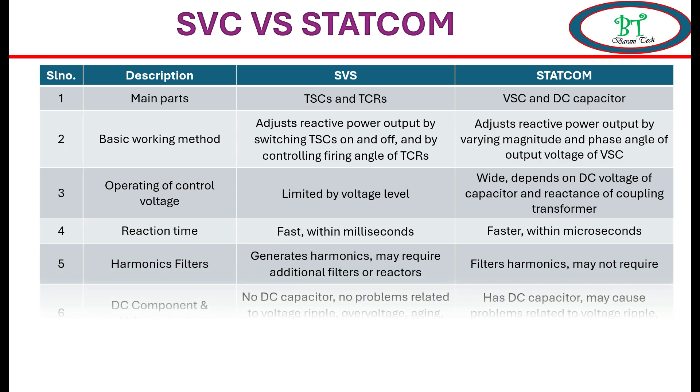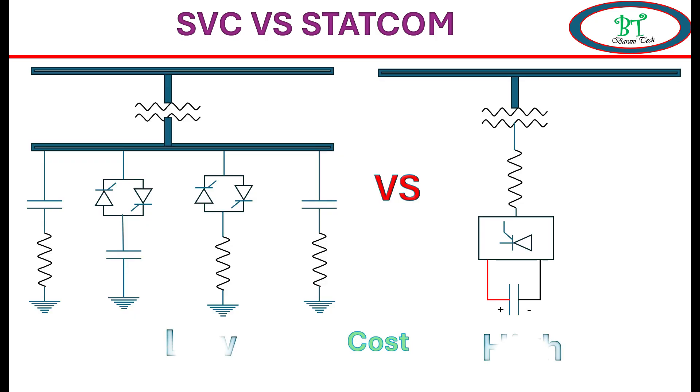The next one is the DC component and voltage ripple in the power system. Due to SVC, it is very less when compared to STATCOM. STATCOM has a DC capacitor which may cause relative voltage ripple and DC component also into the power system. And finally, comparing with cost, SVC is less cost when compared to STATCOM.